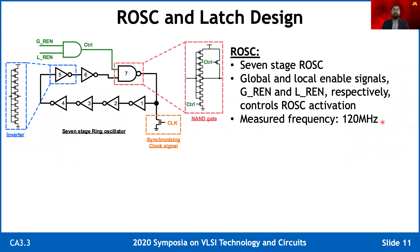We designed a seven-stage ring oscillator where six inverters and one NAND gate were used. One of the signals to the NAND gate comes from a global ring oscillator enable and a local ring oscillator enable. Together, these two signals determine which ring oscillator should be activated and when. We added an NMOS transistor whose gate is controlled by a global clock signal to stabilize the ring oscillator phases. We intentionally reduced the ring oscillator frequency using a stacked transistor, with our major frequency at locking condition being 120 MHz.